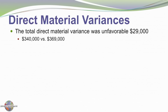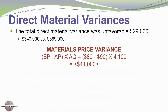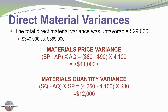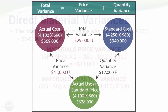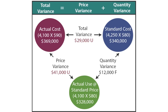Comparing the actual expenditure of $369,000 to the standard cost of $340,000, we have a $29,000 unfavorable variance. Breaking it down further: the materials price variance shows we paid $90 when the standard price was $80 — $10 more per piece times 4,100 pieces gives a $41,000 unfavorable material price variance. However, we used less material: 4,100 pieces versus the standard 4,250, times the $80 standard price, gives a $12,000 favorable material quantity variance. The net is a $29,000 unfavorable total material variance.